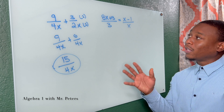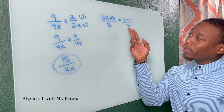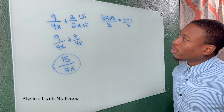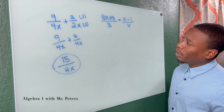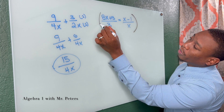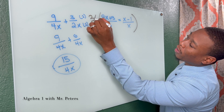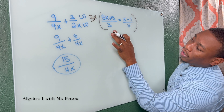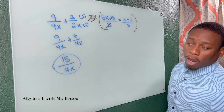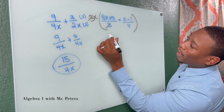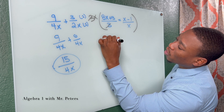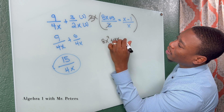So let's apply that same rule to this problem. The first thing we want to know is what is the common denominator? And the common denominator is going to be 3x. So on this part right here, the 3s cancel. All we need to do is distribute x to 8x plus 13. We're going to get 8x squared plus 13x.